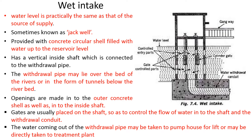The wet Intake structure is called a Jack well. Because it stores water inside, the water level in the well is the same as the water level in the source. It consists of a concrete shell filled with water, provided with a vertical shaft. Entry ports on the vertical shaft allow water in, flow control valves are provided at the top, and water is transferred to the withdrawal pipeline. The Jack well transfers water to the pump house and through the withdrawal pipeline to the water treatment plant.